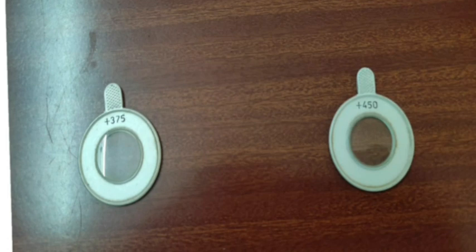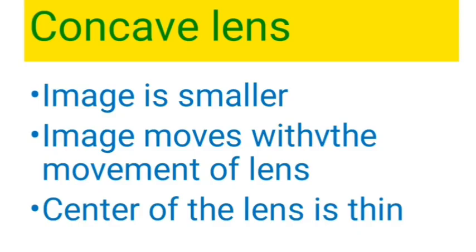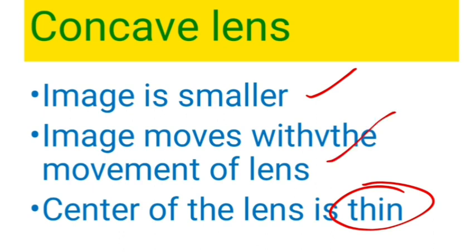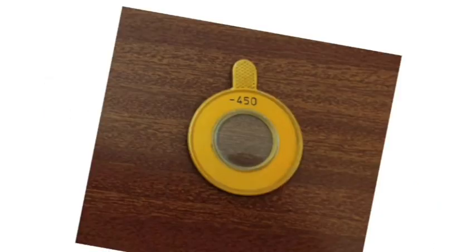The discussion will then go into hypermetropia and presbyopia. The next type of lenses are concave lenses, which are opposite to convex. The image formed is small, the center of the lens is thin, and the image moves with the movement of the lens. This is the concave lens with a minus sign — these are diverging lenses. The discussion will then be about myopia.